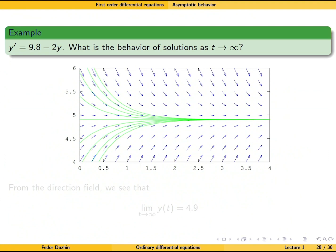So what we see is that there is an equilibrium solution, and all other solutions approach the equilibrium. The equilibrium solution can be found analytically. So the fact that it is precisely 4.9, we can find it directly from the differential equation.